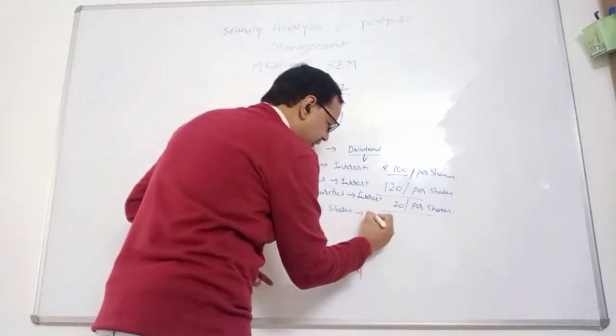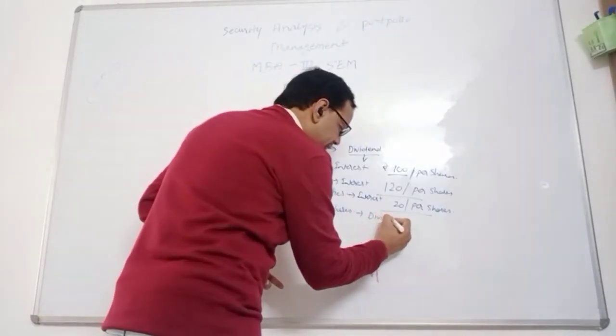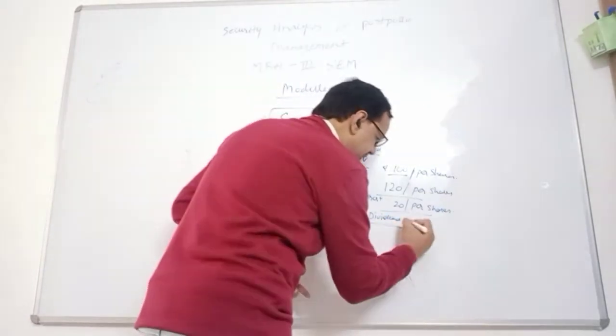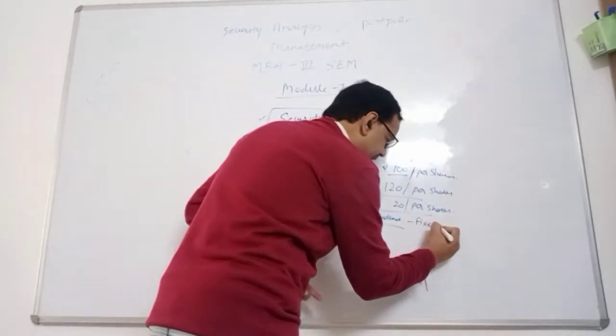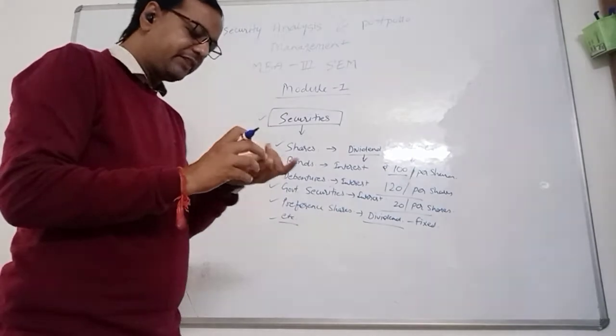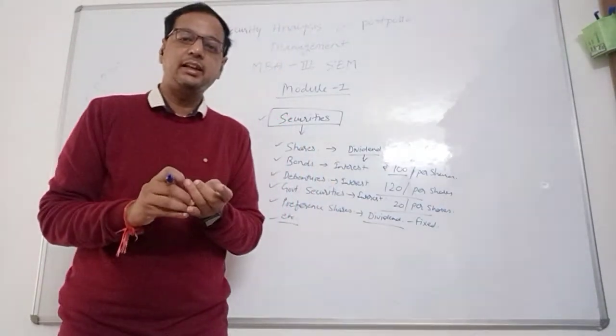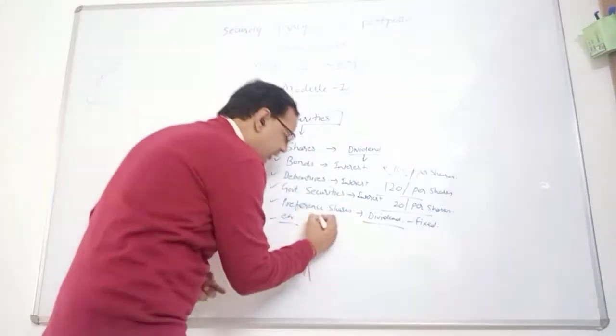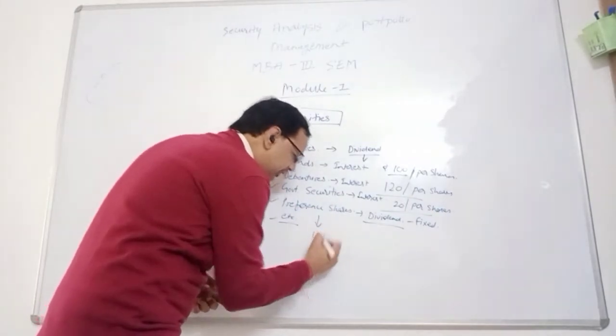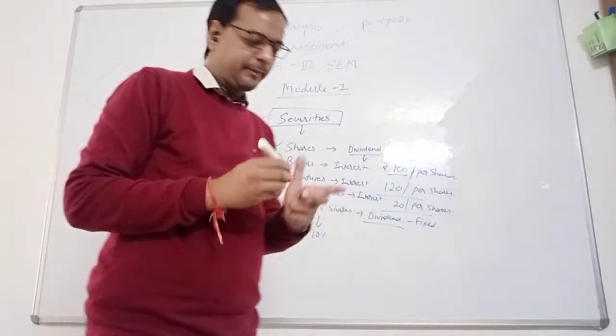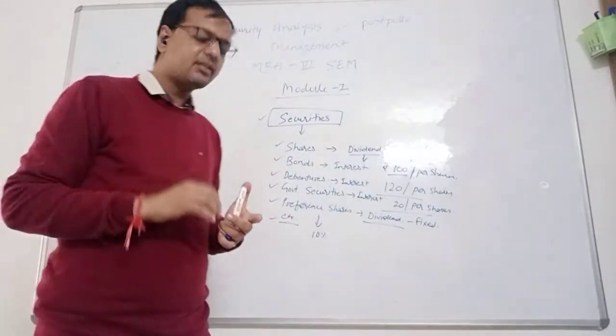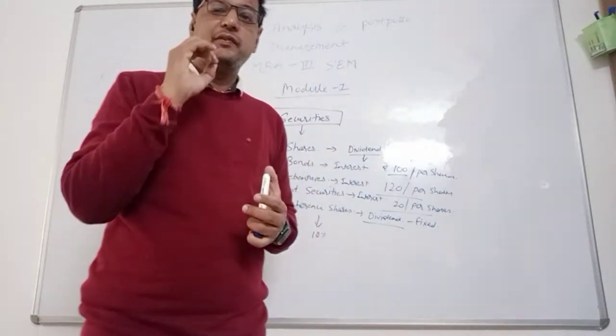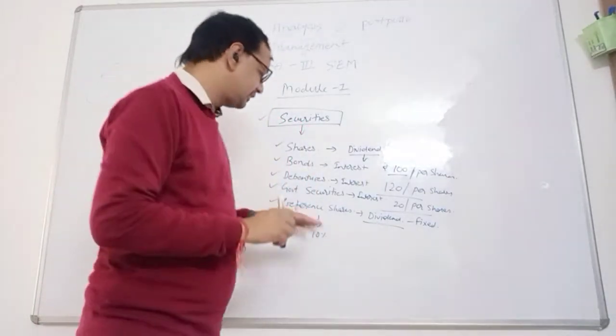Preference share, you have received fixed dividend. In preference share, fixed dividend has been distributed by the companies. If company issued 10% preference share, then company give you 10% fixed dividend on these preference shares.